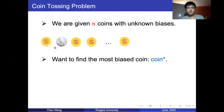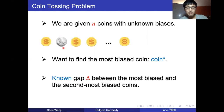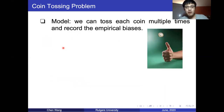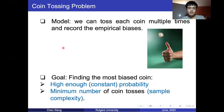In this presentation, I will use this graphic to denote the most biased coin — I have a reason and I will let you know later. We are also given a gap parameter delta, which is the gap between the most biased and the second most biased coins. We define the number of coin tosses as the sample complexity of the problem.